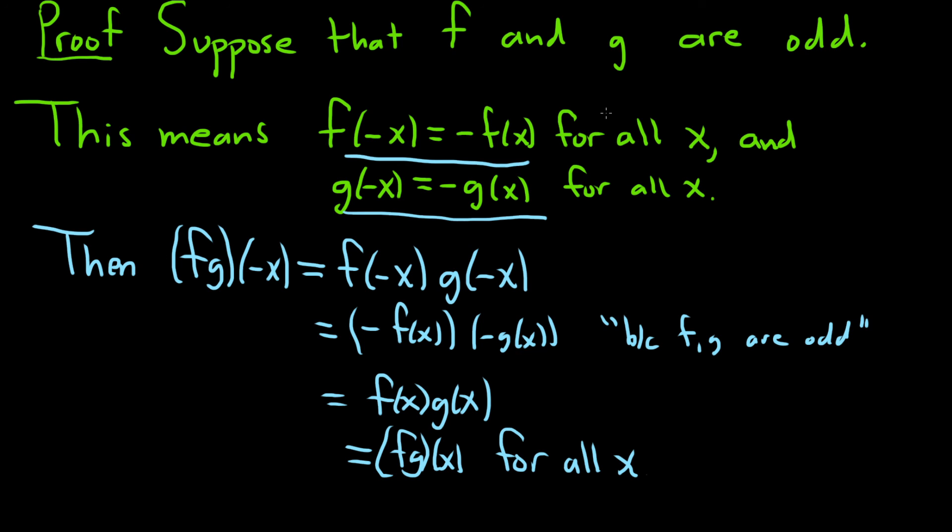So we started with two functions that were odd, and we showed that fg of negative x equals fg of x. This is what it means for the product to be even. So fg is even, and that completes the proof.